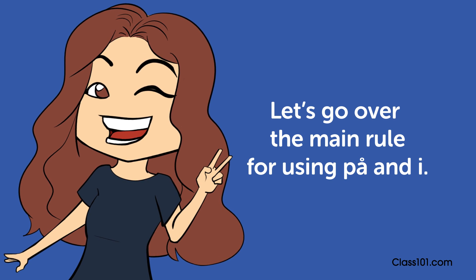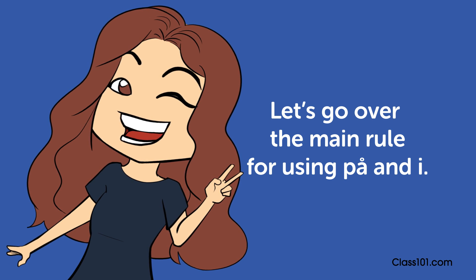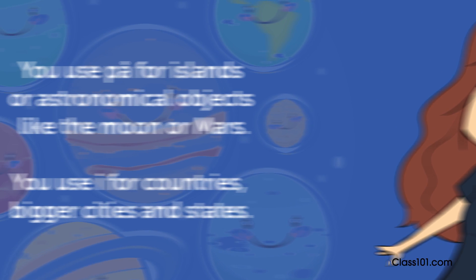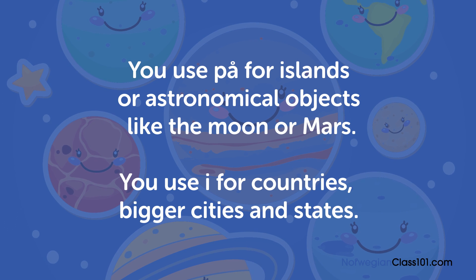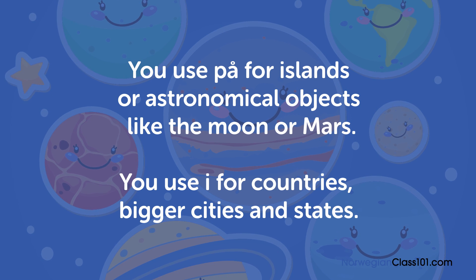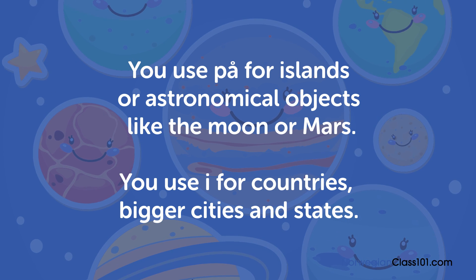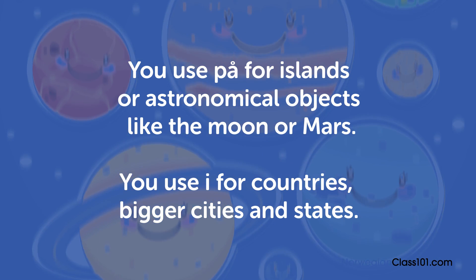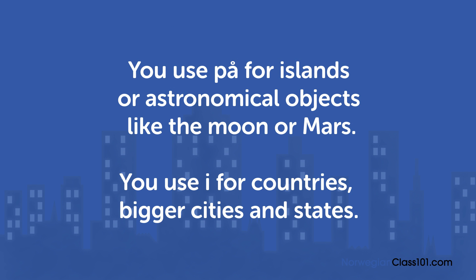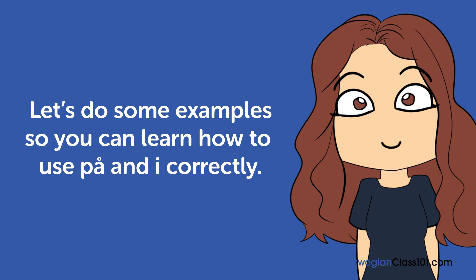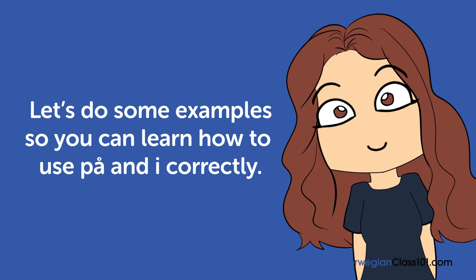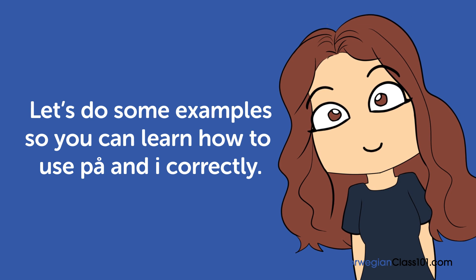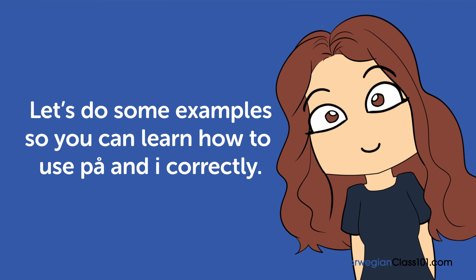Let's go over the main rule for using på and i. You use på for islands or astronomical objects, like the moon or Mars. You use i for countries, bigger cities, and states. Let's do some examples so you can learn how to use på and i correctly.